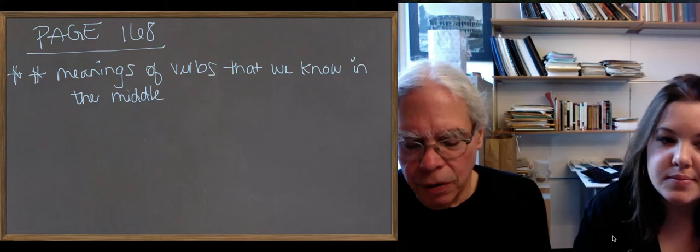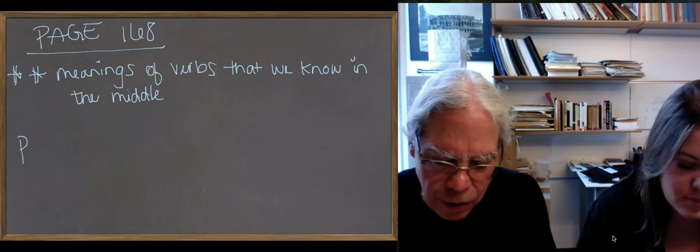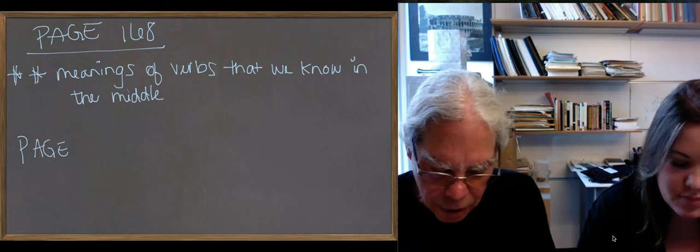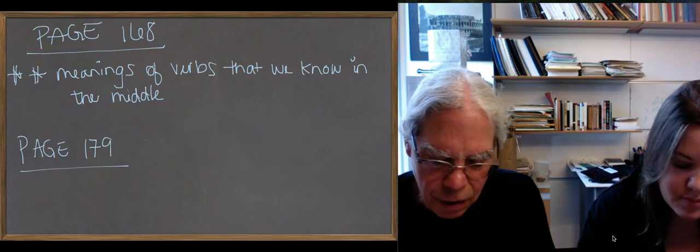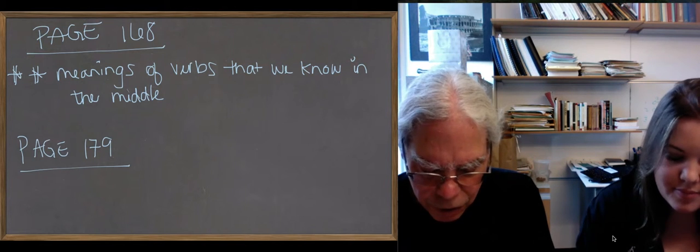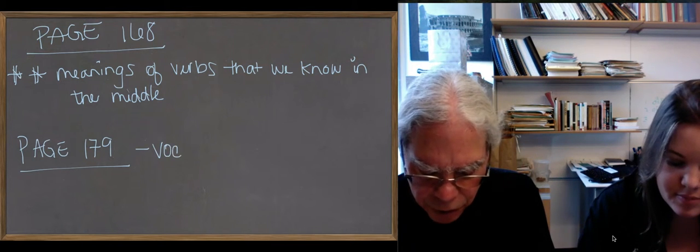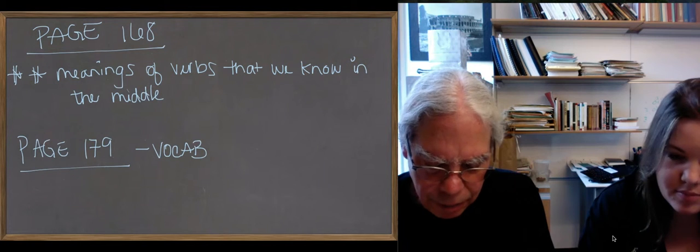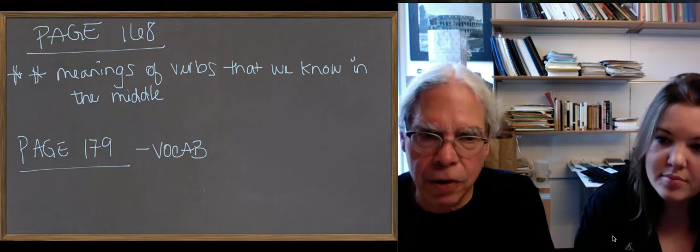All right. But now let's look at the vocabulary words. Let's start with the verbs. There are three new verbs in this lesson. There's klepto, the verb to steal, sozo, the verb to save or preserve, and leipo, the verb to leave.